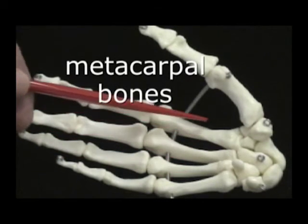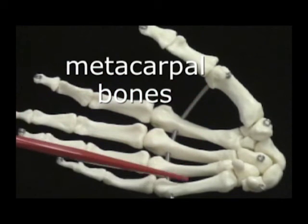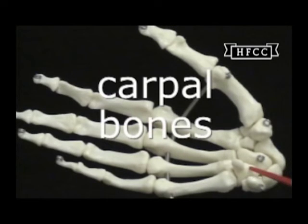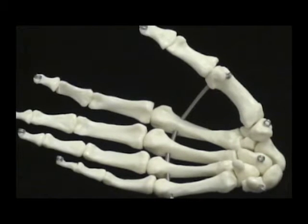The metacarpal bones are the palm bones, covered with soft tissue forming the palm of the hand. Now take a look at the carpal bones. These are the bones that are connected between the forearm and the metacarpals.